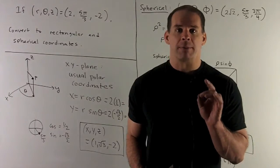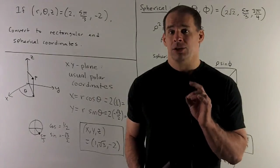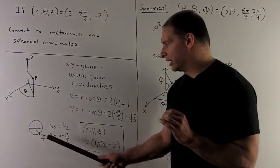Okay, first, 5 pi thirds is going to be in the fourth quadrant. It's only pi thirds away from 2 pi, which is 6 pi thirds. So we're down here.